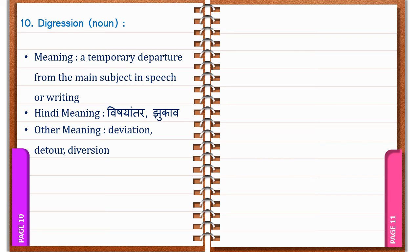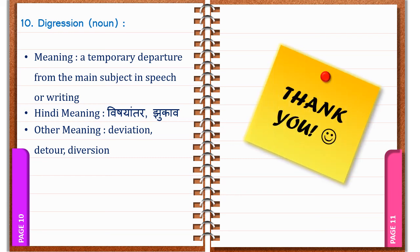Digression. D-I-G-R-E-S-S-I-O-N. Digression. It's a noun. It means a temporary departure from the main subject in speech or writing. In Hindi: Vishyantar, Jhukav. Other meanings: Deviation, Detour, Diversion.